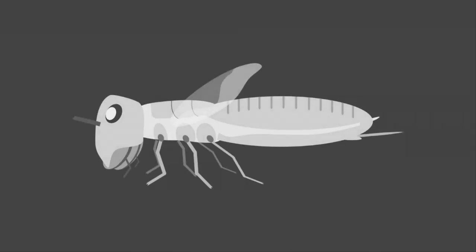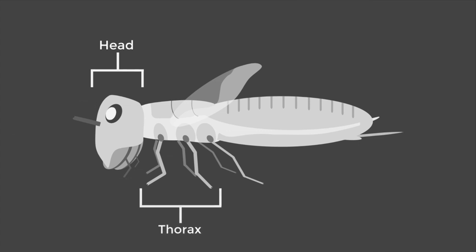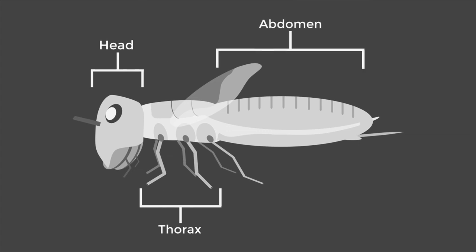The insect body is divided into three sections. One, the head — often separated from the thorax by the neck, containing the mouth, eyes, and antennae. Two, the thorax — where the wings and six legs are attached. And three, the abdomen — a segmented tail section terminating in the anus, sometimes containing other features such as claws or filaments.